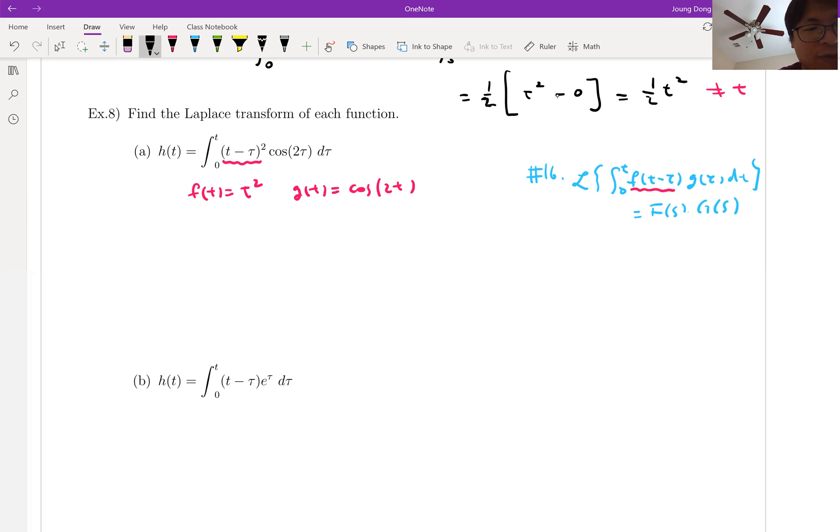Now let's talk about Laplace transform. Laplace transform of the integral from 0 to t of f(t minus tau) and g(tau) d tau. By number 16, it is equal to f(s) times g(s).